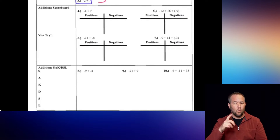For the first example, both numbers are negative, so we use SAC. We add 9 plus 4 to get 13, and then keep the sign — since both were negative, our final answer is negative 13. This makes sense: if both numbers were positive, 9 plus 4 is 13 and stays positive. When you see negatives, just attach that negative to the result.